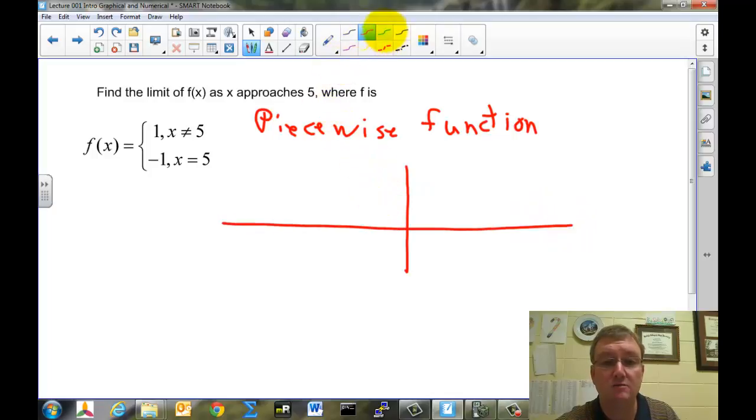There are my x and y axis. And what does it say? That when x is not the number 5, the function is 1.